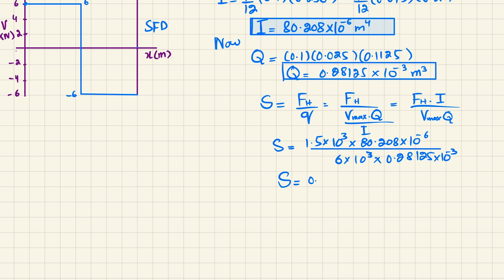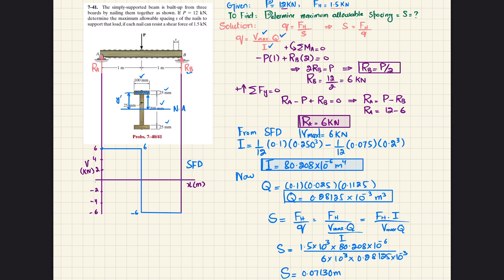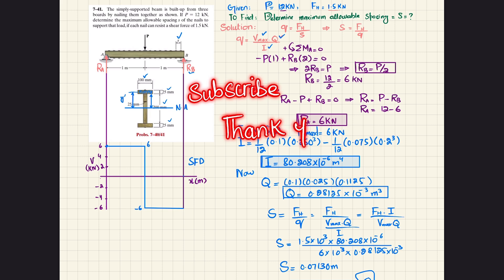Solving this gives the nail spacing s = 0.07130 m, which in millimeters is 71.3 mm. This is the required nail spacing s, and that was all about problem 7-41. I hope you enjoyed this video and learned from it. If you are new to my channel, subscribe and press the bell icon to get notifications about every new video. If you have any questions, ask in the comment section. Thank you for watching.